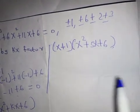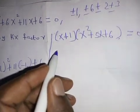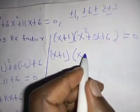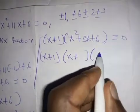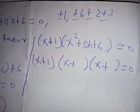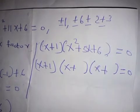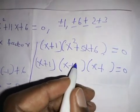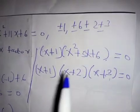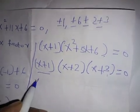We can factorize x squared plus five x plus six further. Setting the full expression equal to zero, we write: x plus one, times bracket x plus a factor, times bracket x plus a factor, equals zero. We look for two numbers that multiply to give six and add to give five — those numbers are two and three, since two times three is six and two plus three is five.